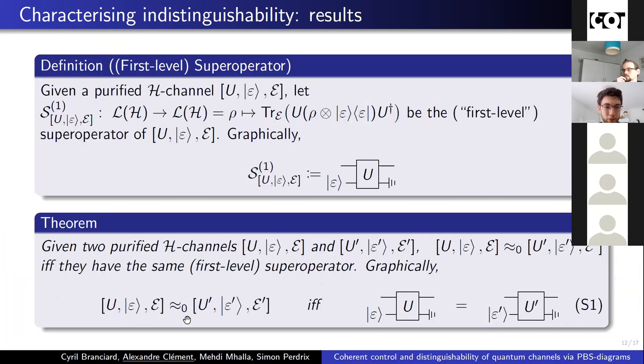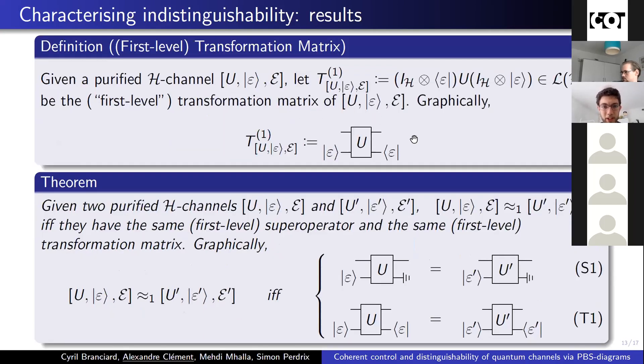In the first case without coherent control, not very surprisingly, we get the fact that the two channels are indistinguishable if they have the same CPTP maps, the same superoperator. But when in the case with coherent control but not repetition, we have to add this transformation matrix to the description of the channel to have a full description, which is obtained by doing the evolution. Instead of tracing out the environment, we project it on the initial state.